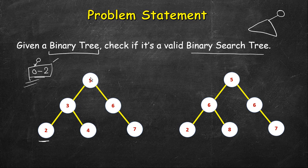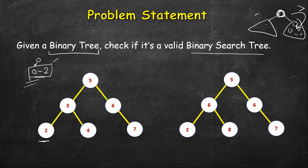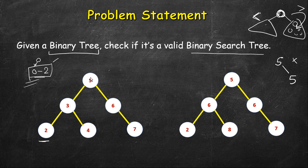In a binary search tree we have an additional criteria: given any node, all values in the left subtree must be strictly less than the root node, and all values in the right subtree must be strictly more than the root. Even the equal case is invalid — if there are duplicate values, such as 5 appearing again on the right side, that is invalid. This must hold for every node in the tree, not just the main root.